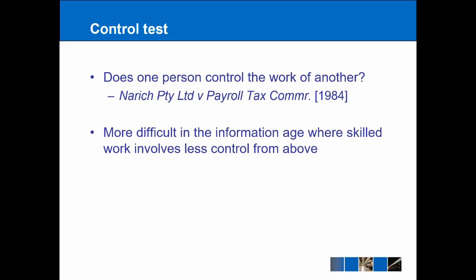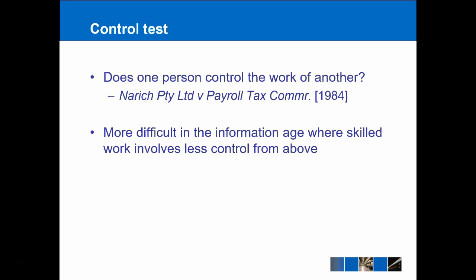The first test is called the control test: does one person control the actions of another? In an employment relationship, there will be much greater control exerted over the employee, as we've seen in the case of Norwich Party Limited and Payroll Taxation Commissioner. However, this idea has somewhat fallen out of use in more recent times, because you can imagine situations with more skilled work — for example, a computer programmer — where the employer might know absolutely nothing about computer programming. They just want a piece of software to work, so they don't exert much control over the programmer. The control test is therefore less relied upon, but is still a useful contribution when trying to define who an employee is.